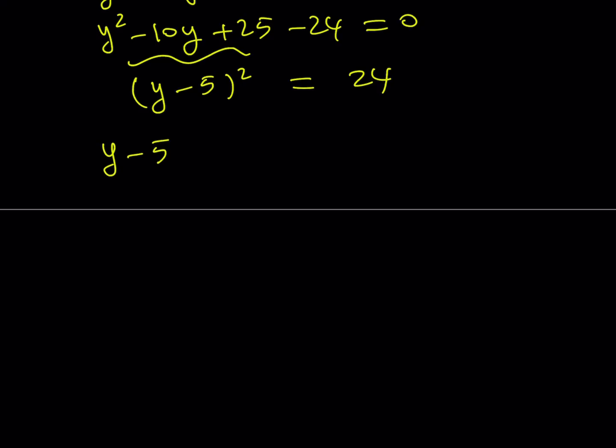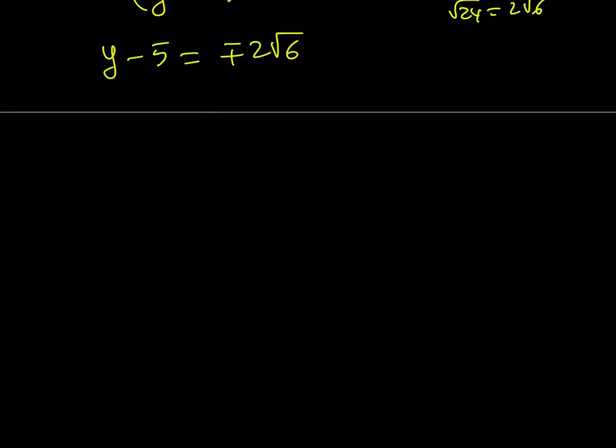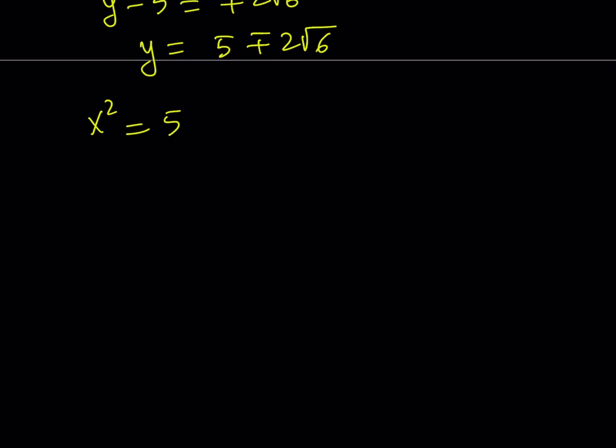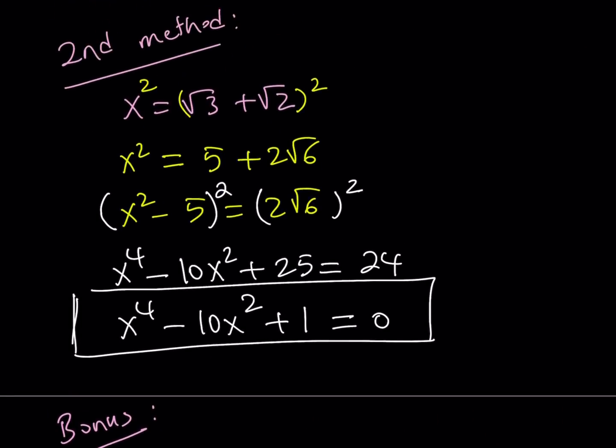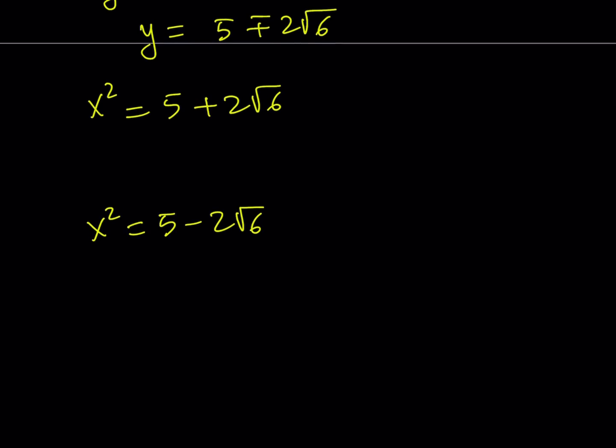From here, I can safely say that y minus 5 is plus minus root 24, which is 2 root 6. So y becomes 5 plus minus 2 root 6. I wasn't trying to solve for y, I was trying to solve for x. But y is equal to x squared. Let's go ahead and back substitute. Replace y with x squared. So we have 5 plus 2 root 6. And this is why I told you, pay attention to this piece right here. When you square root 3 plus root 2, what did you get? 5 plus 2 root 6. So if you square root it, you're going to get root 3 plus root 2.